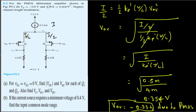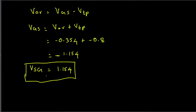Next, finding Vs, Vd1, and Vd2. The gate voltage is given as zero volts. We can use Vsg to find Vs.